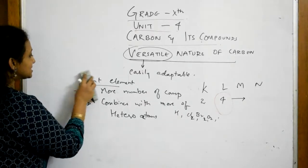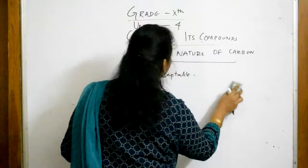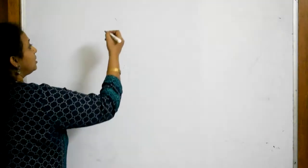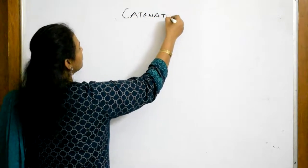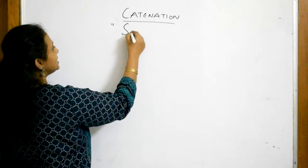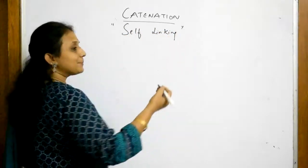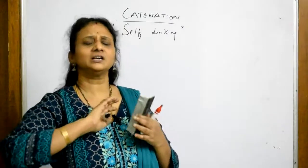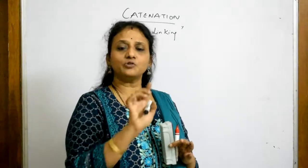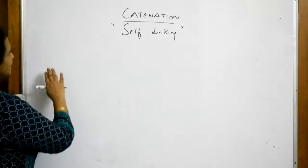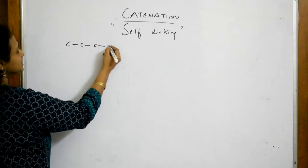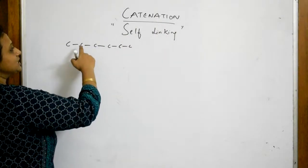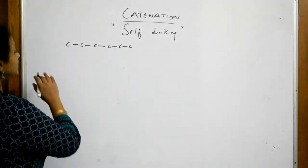After this tetravalency, next thing is this carbon having four electrons can show us a property called catenation. What is catenation? The keyword is self-linking. Carbon combines with itself like this. It can form a chain like this. When it forms a chain or this self-linkage property, it is called catenation. I call it as a straight chain.